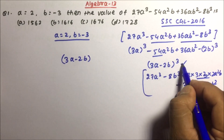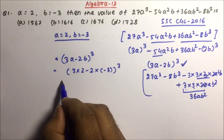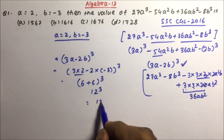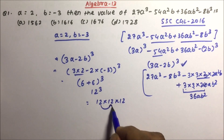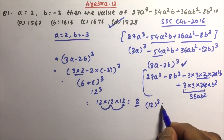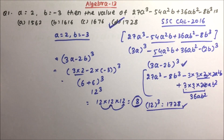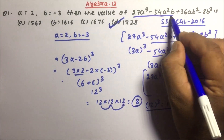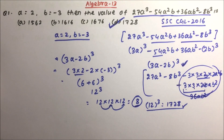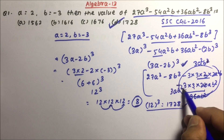So we have (3a − 2b)³. Now a is 2 and b is minus 3. So 3 × 2 = 6, minus (−3) gives plus 6, so we get 12³. Now 12³: 2 × 2 = 4, 4 × 2 = 8, so the last digit is 8. Option D is the correct answer. You don't even need to fully multiply — just note the last digit is 8, so option D is correct for question number one.